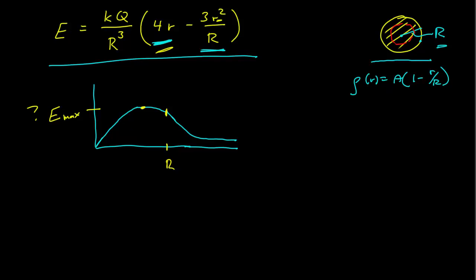So let's find the maximum electric field. The maximum electric field is a maximization problem, and that's going to be where the derivative of the electric field with respect to R is equal to 0.